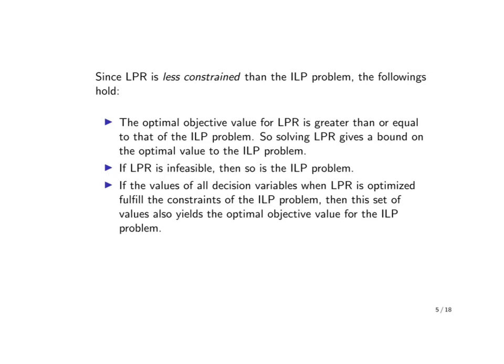Second, if the LP relaxation is not feasible, then neither is the ILP problem, because the ILP problem imposes further constraints on top of those in the LP relaxation. Third, if the values of all the decision variables when the LP relaxation is optimized also fulfill the integer constraints of the ILP problem, then this set of values will also yield the optimal value of the objective function in the ILP problem.